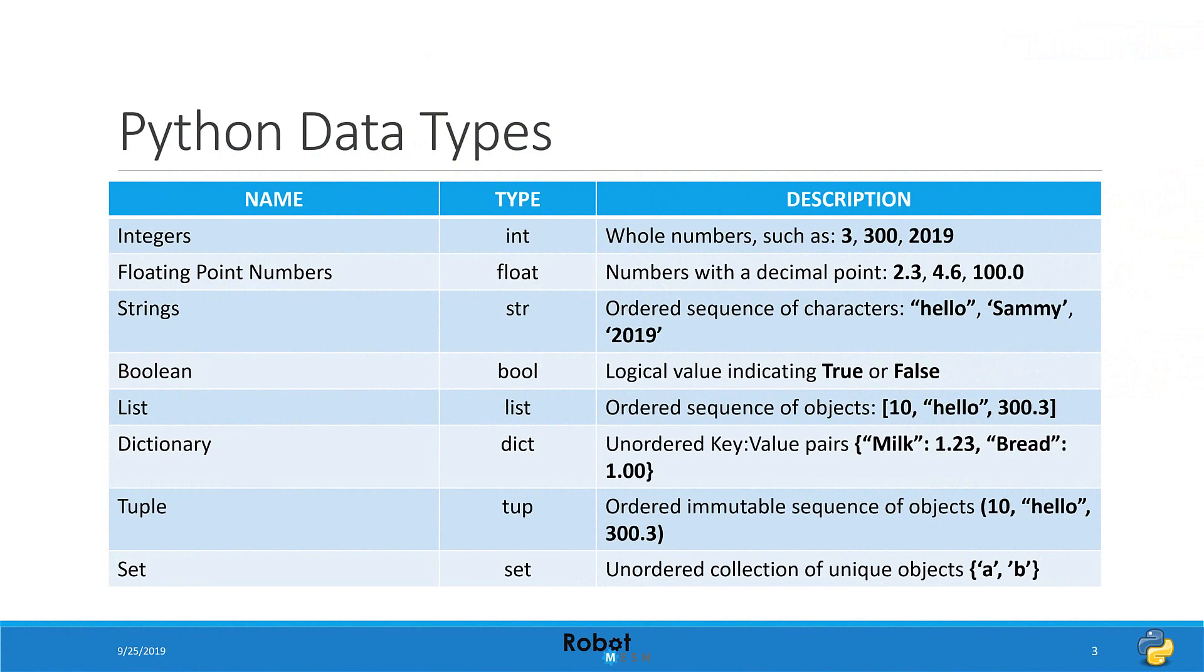The data types that we're going to be discussing are in this table. Here we have the name of the data type on the left-hand column, and then there's the type, which is the shortened internal keyword that Python uses for this name. We see the type as int for integer, float for floating point number, and str for string. Then we have the description column, and that's going to tell us the kinds of values that the particular data type can hold.